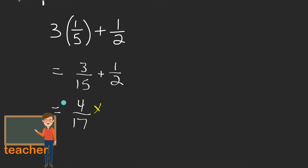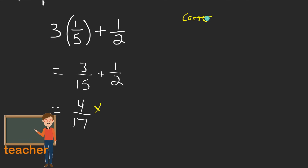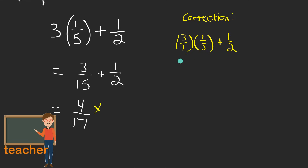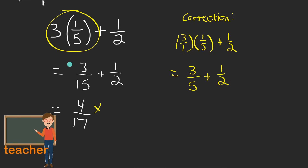So you've made a couple mistakes with fraction rules here. The first: 3 times a fifth isn't 3 fifteenths. It only multiplies by the numerator — let me show you why. You can think of that 3 as a fraction over 1. So I've got 3 over 1 times 1 over 5. When multiplying fractions, you multiply the numerators: 3 times 1 is 3. And multiply the denominators: 1 times 5 is 5. So the correct product is 3 over 5. The 3 just gets multiplied by the numerator.